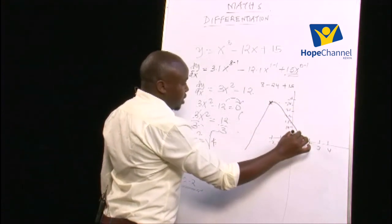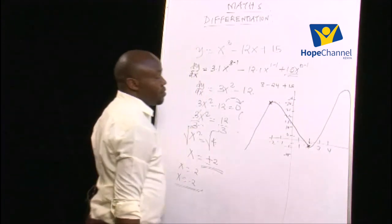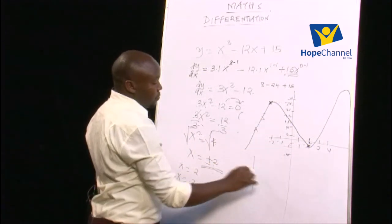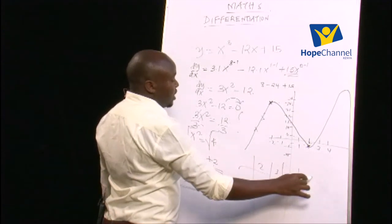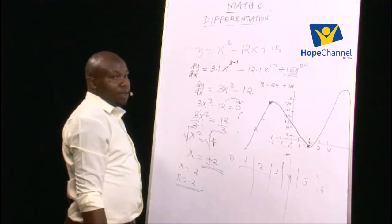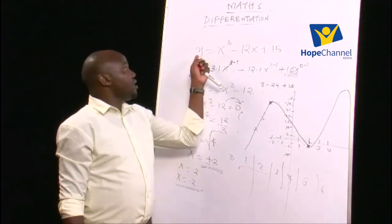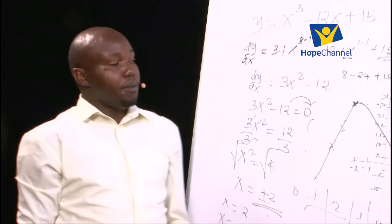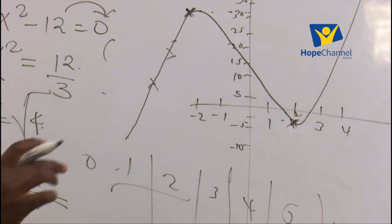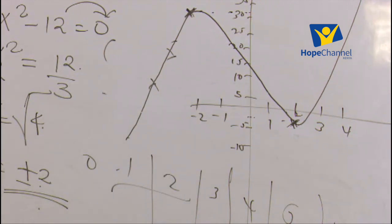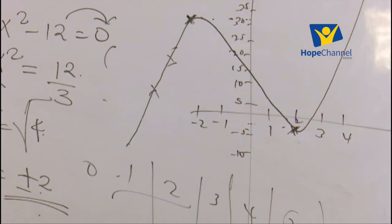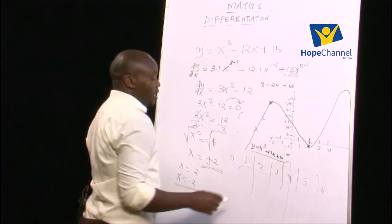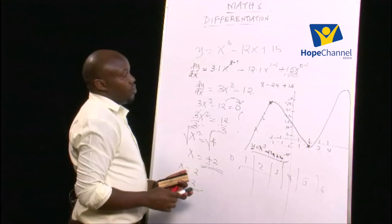Sketch the curve coming up, turning at (−2, 31), coming down, and turning at (2, −1). If you want exact points for more of the curve, pick additional x-values, substitute into y, get coordinates, and plot them. The key point is to identify the turning points for any given curve. Remember to write the equation y = x³ − 12x + 15 on your graph.